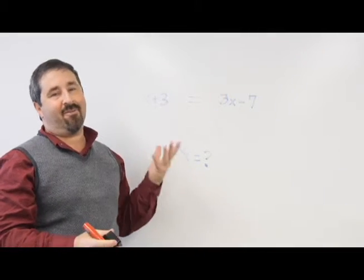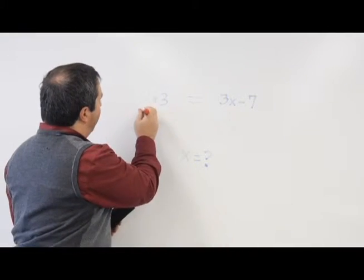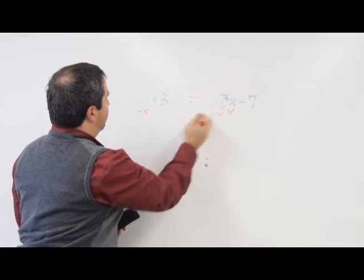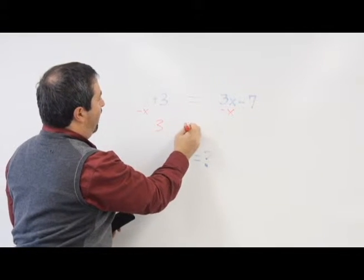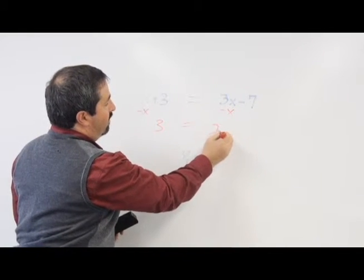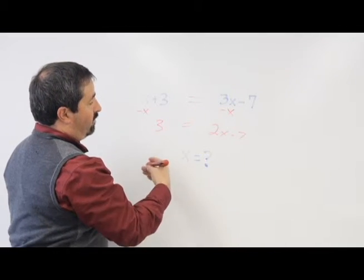Now we solve for x algebraically. Subtract x from both sides. 3 is alone on the left. 2x sits on the right minus 7. Combine like terms.